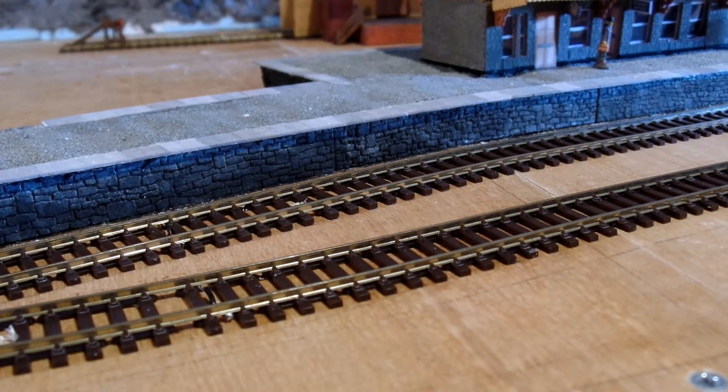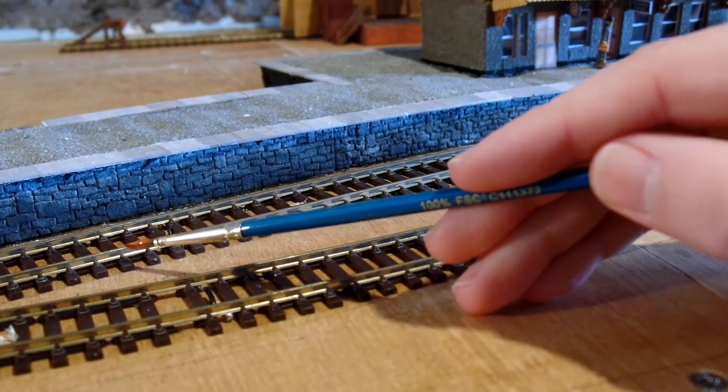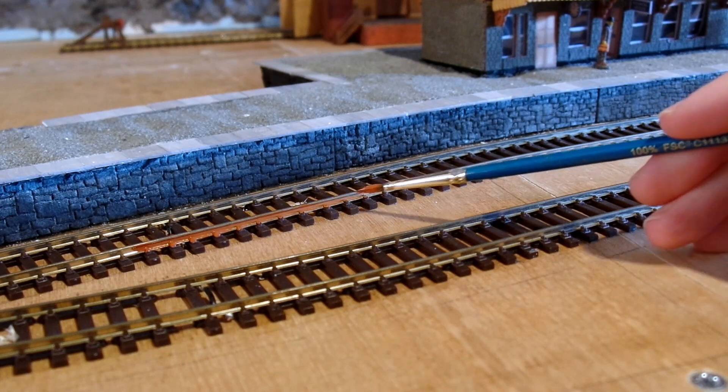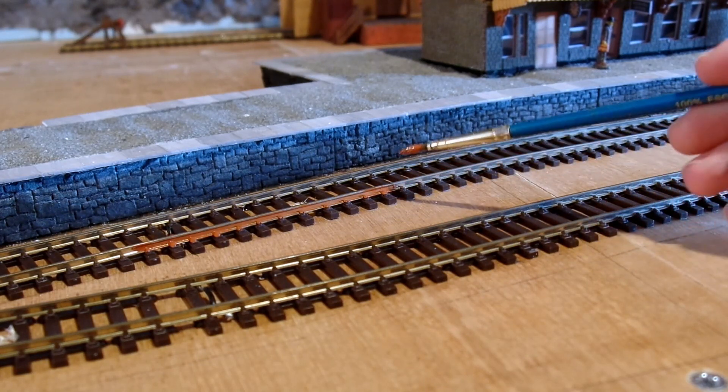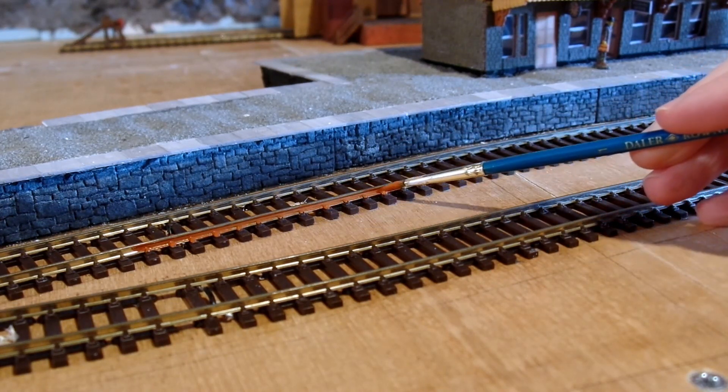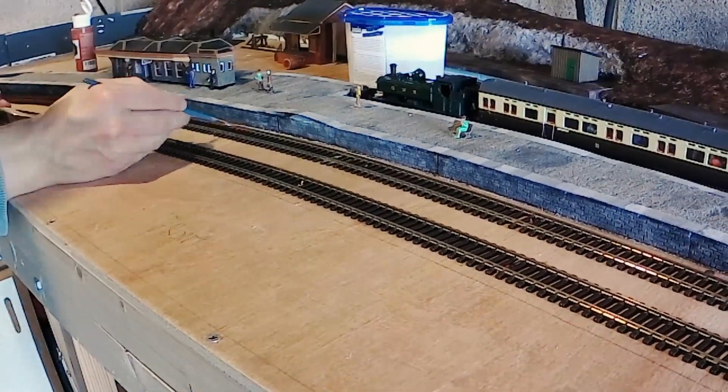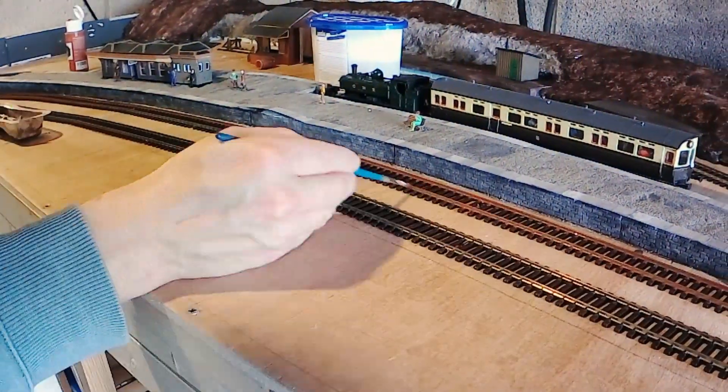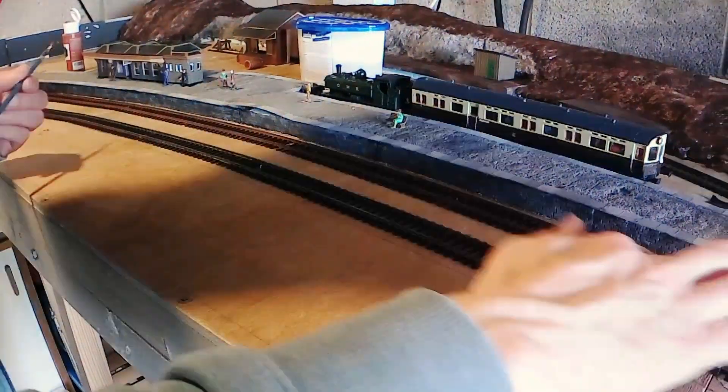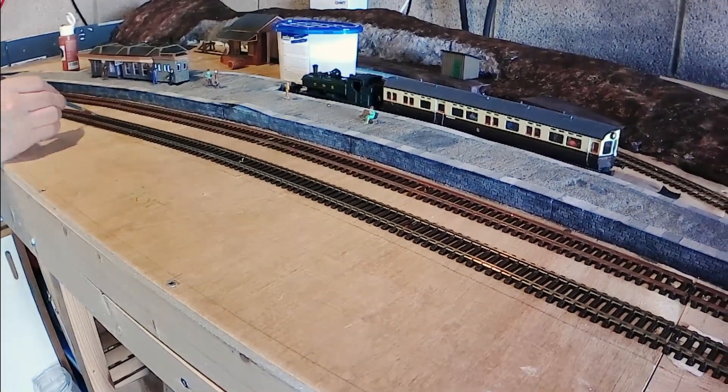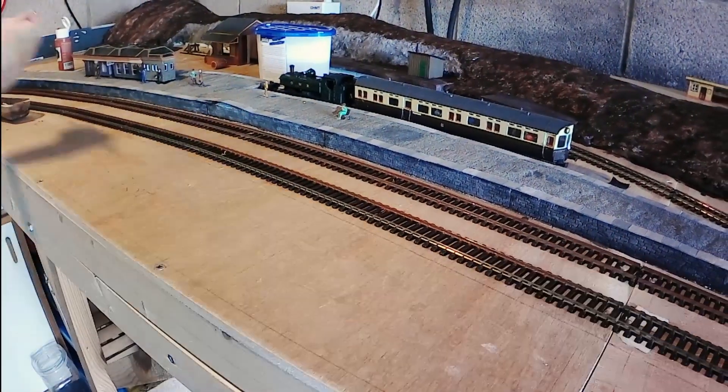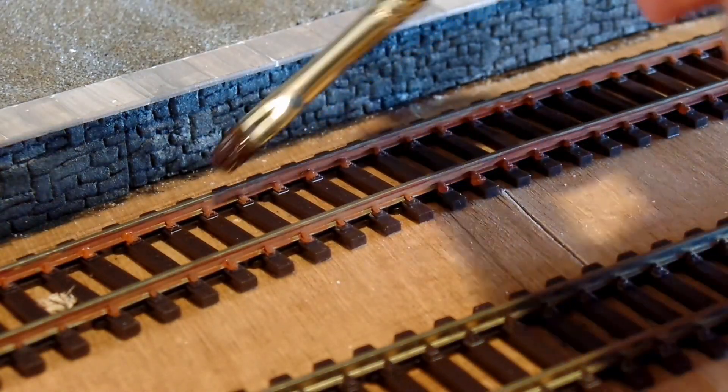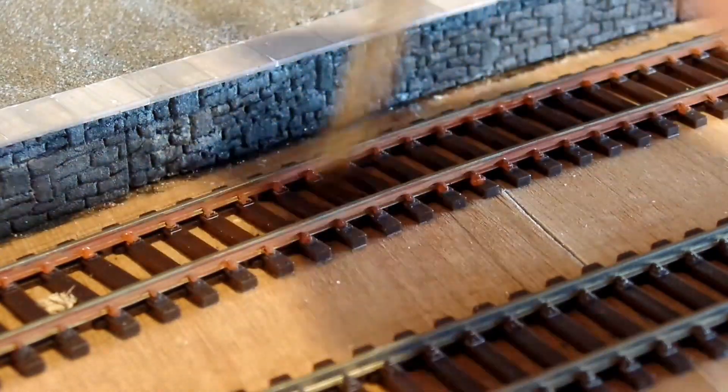Firstly, I need to weather the track. I don't have a fancy airbrush, but I do have a paintbrush, and that'll do just fine. This is just brown acrylic paint and gives the sides of the rails a lovely rusty colour. I'll also give the sleepers a coat of slightly darker brown, which helps to stop them look quite so plastic.